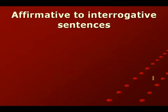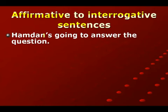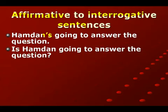الحين نشوف affirmative to interrogative sentences - كيف نتغير الجملة الثابتة إلى جملة استفهامية. أول جملة: Hamdan's going to answer the question - يعني حمدان بيجاوب السؤال. هاي عندنا contraction - حمدان وis جمعناهم مع بعض فأصبح Hamdan's. ونتغير هاي الجملة الثابتة إلى استفهامية فتصير: Is Hamdan going to answer the question? يعني هل حمدان بيجاوب السؤال؟ is هاي الشكل البي، وبعدين الفاعل حمدان، ثم going to، ثم answer أول حالة الفعل، ثم the question المفعول، وأخيراً علامة الاستفهام.